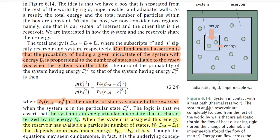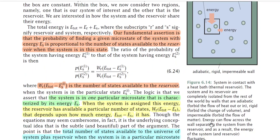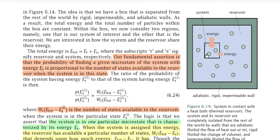The system and the reservoir are completely isolated from the rest of the world by walls that are adiabatic (forbid the flow of heat), rigid (forbid the change of volume), and impermeable (forbid the flow of matter). The system and reservoir are in contact with each other, but system plus reservoir together are isolated from the outside world. The shaded portion represents the adiabatic, rigid, and impermeable wall separating both from the outside world.